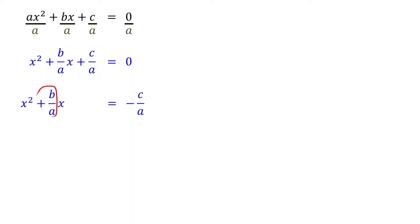Next, find half of the coefficient of x and square it. Remember, dividing by 2 is equivalent to multiplying by 1 half.